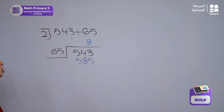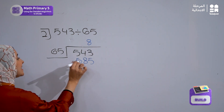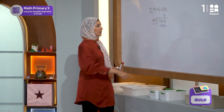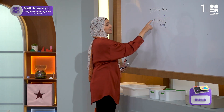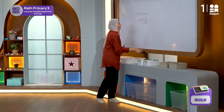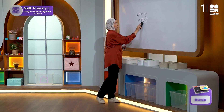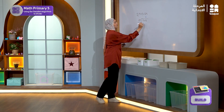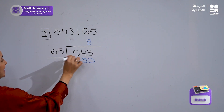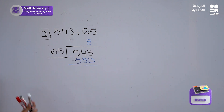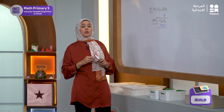Instead of 9, I will take 8. So this time I will multiply 8 times 65, and my new product is 520. Let's write it: I will write 520 here.